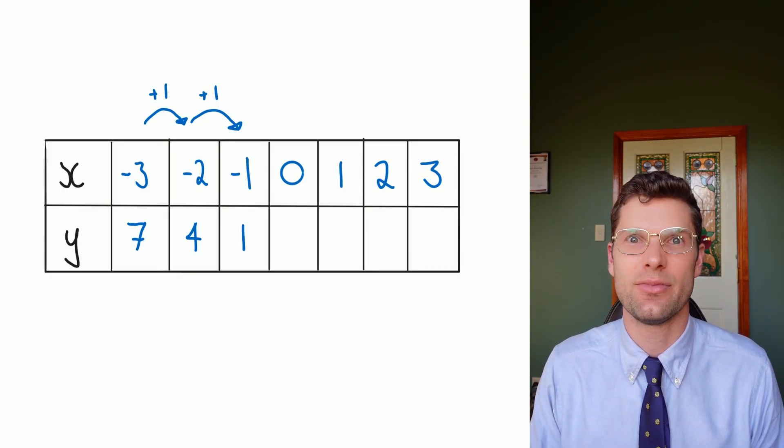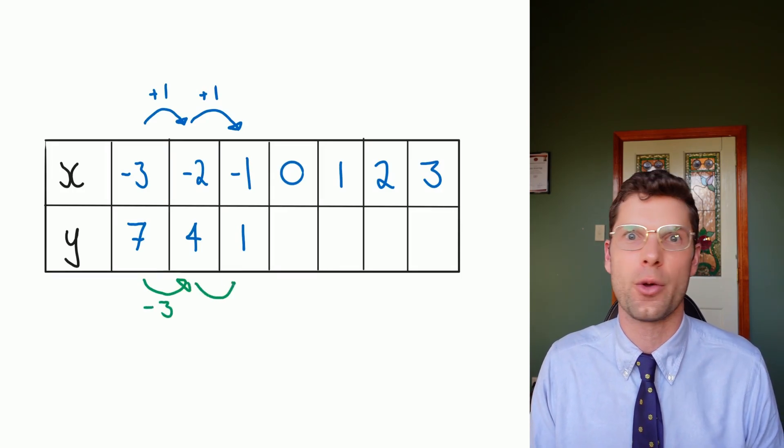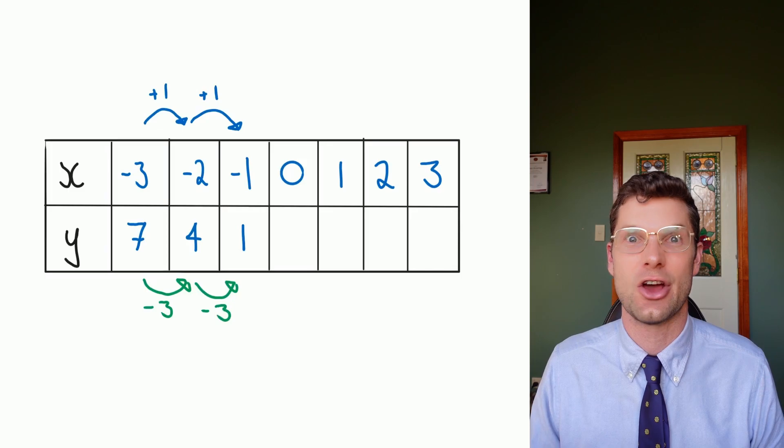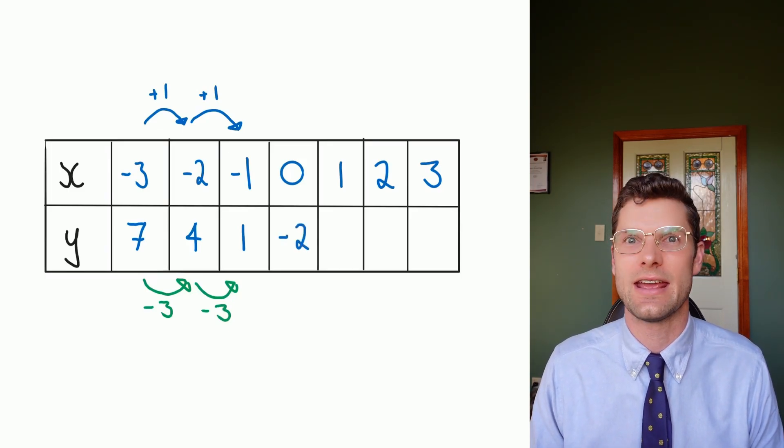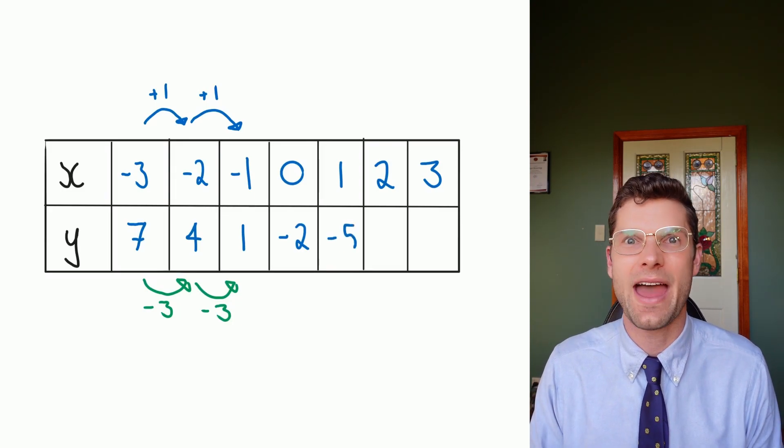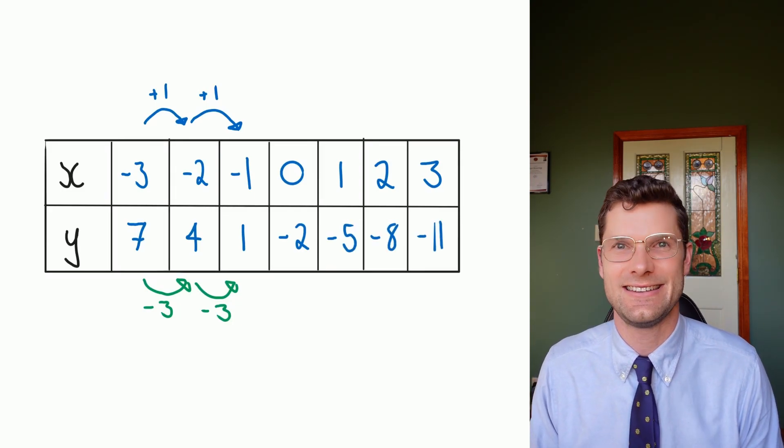Then for the y's, it's the exact same thing. What's the pattern? 7 to 4 is -3. 4 to 1 is -3. So guess what the next bit's going to be? -3 again, we've got -2. -3 from that, -5. -3 from that, -8. And the pattern still continues.